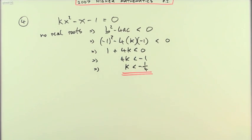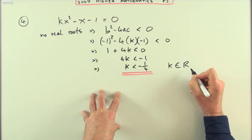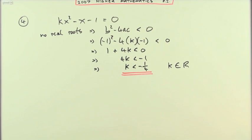And that's really all there was to it. You can, if you like, add k can be any real number less than negative a quarter. But that's the part they're looking for.